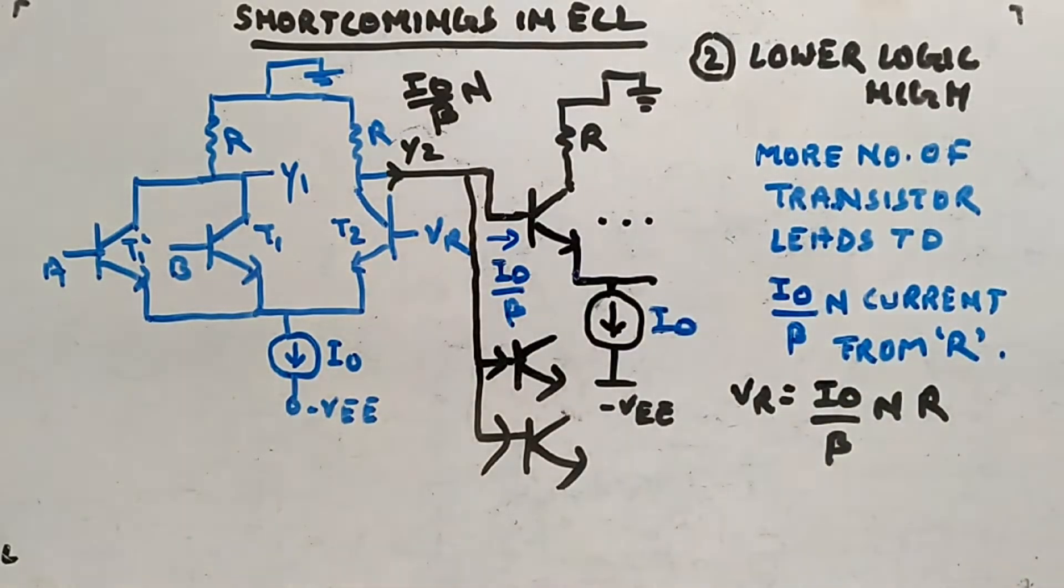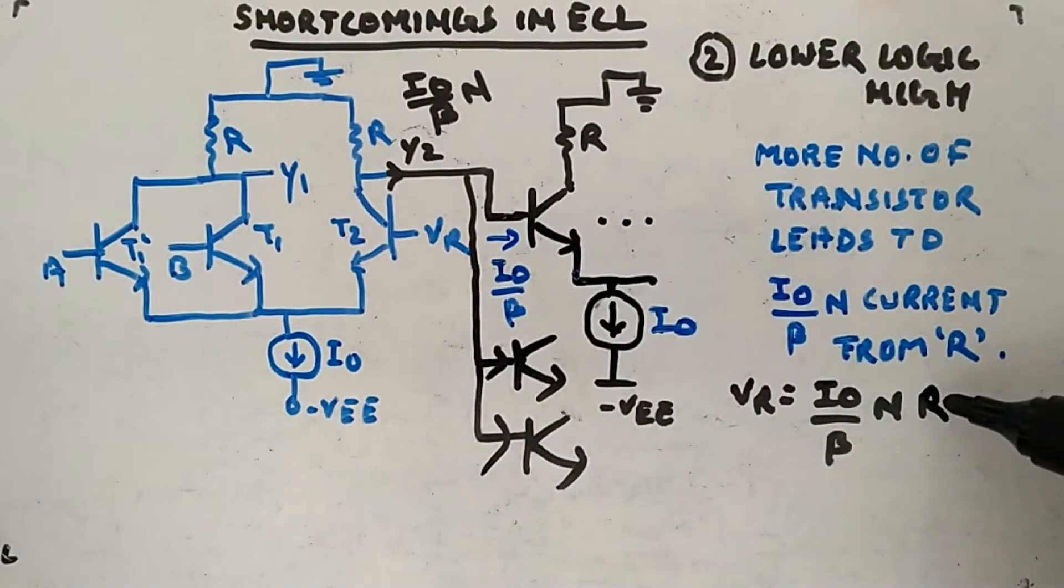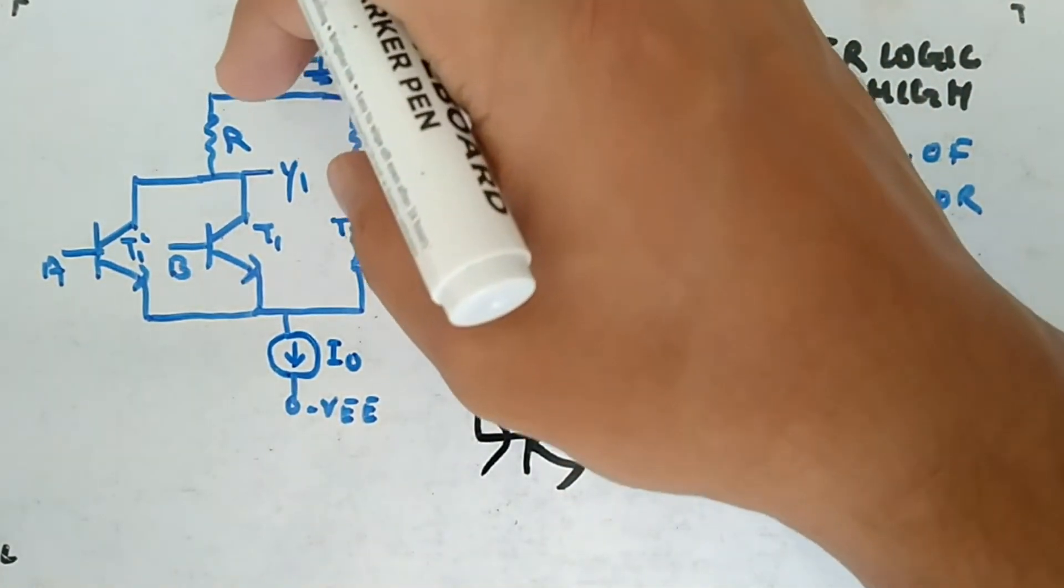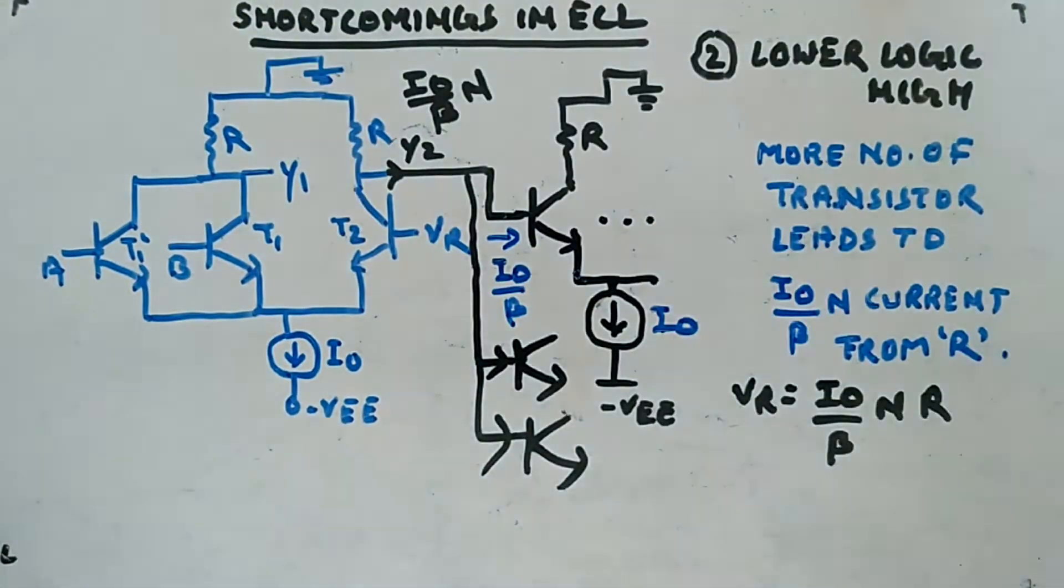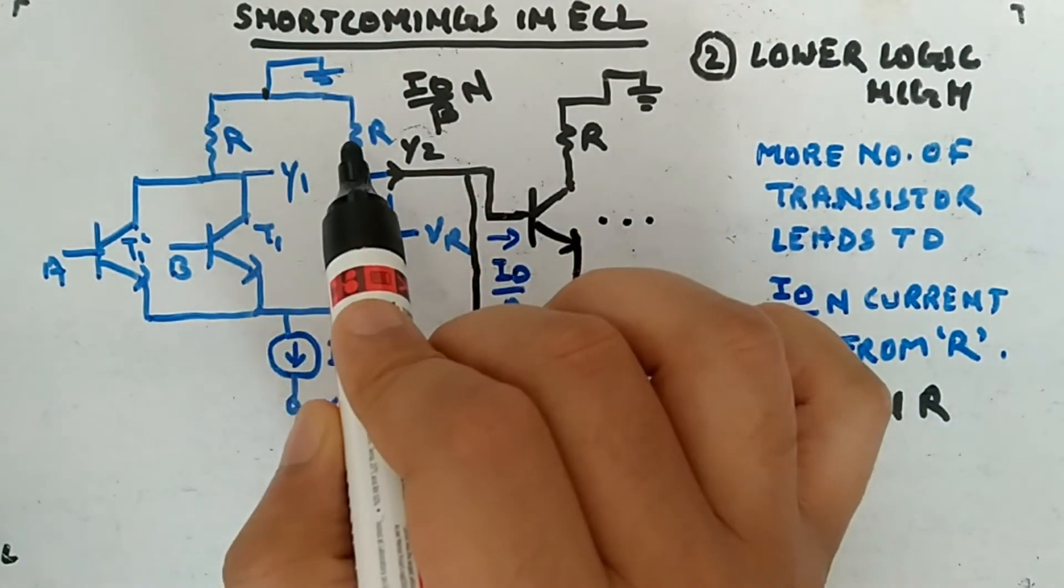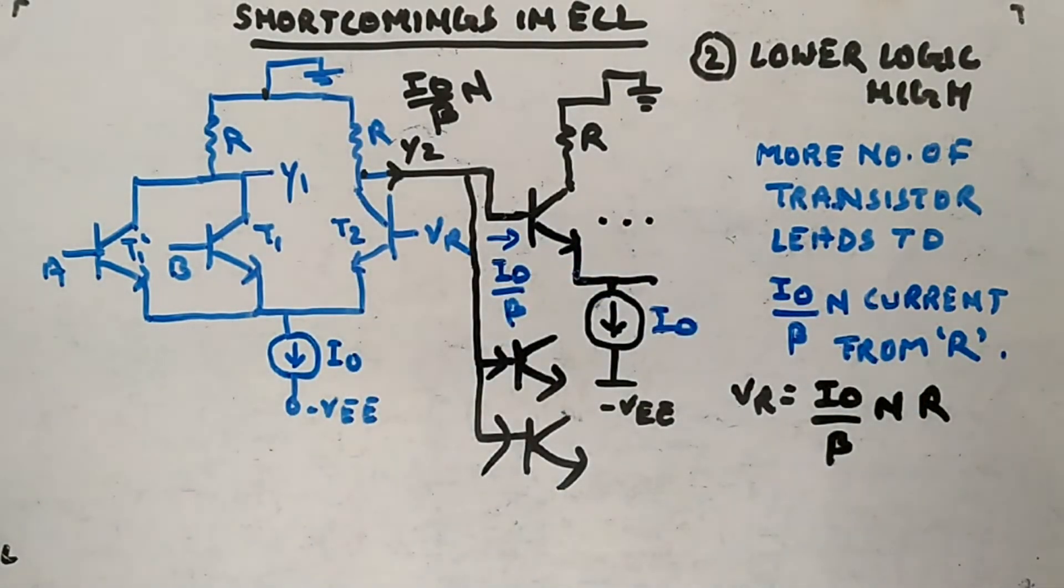Since this is the current flowing through this R, what will be the drop across it? VR equals I0 divided by beta n into R. This is the current, this is the resistance. Resistance multiplied by current is voltage. If the value of n increases, if you increase the number of fan outs, this voltage will increase and you will have a negative drop.